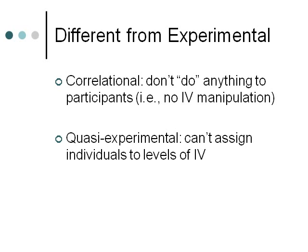In quasi-experimental research, things may be done to participants, but you can't assign individuals to levels of the independent variable. Quasi-experimental research can also be sort of like correlational, where you're not doing things — like if you're looking at gender differences on some trait. Some would argue that's quasi-experimental; I would argue it's closer to correlational. Quasi-experimental is really when you're trying to do an experimental type thing and look at cause and effect, but you just can't assign individuals to levels of the independent variable for some particular reason.